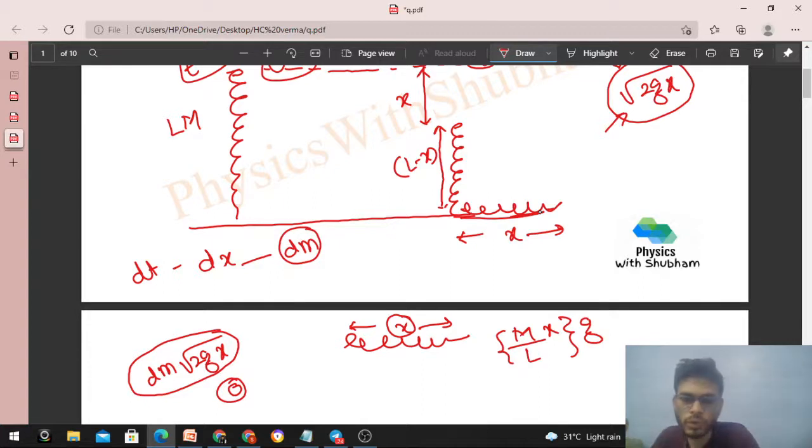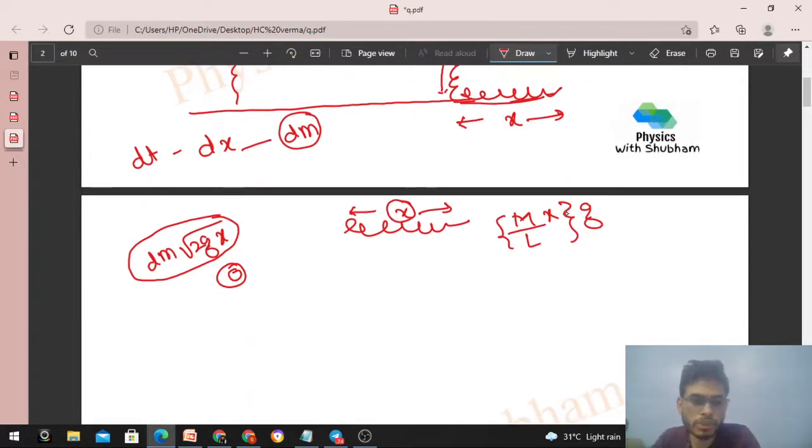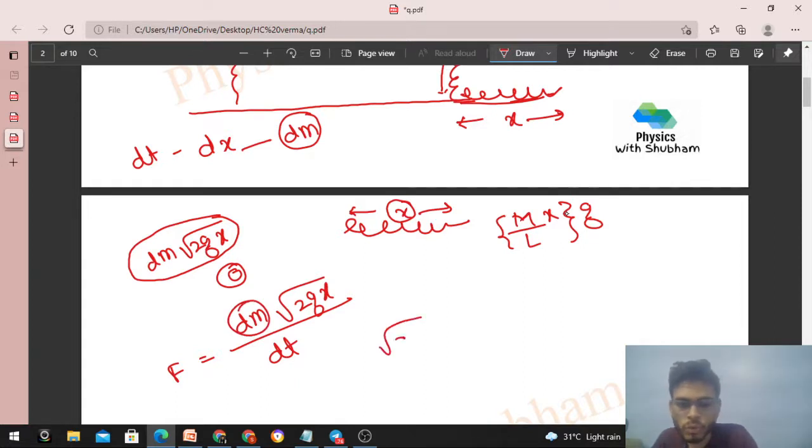So yeh joh change hua na momentum me, yeh bhi force joh laga - that is rate of change of momentum - yeh wala joh force hai yeh bhi lagega by the chain on the floor niche ke tarah. Jitna momentum change hua aur rate of change of momentum, that is also the force exerted by the chain on the floor. So ek kaam karte hai, pehle rate of change of momentum nikalte hai. Momentum ka change kitna hai? dm into under root 2gx. Aur kitnay time me? dt. So this is the force by the chain.